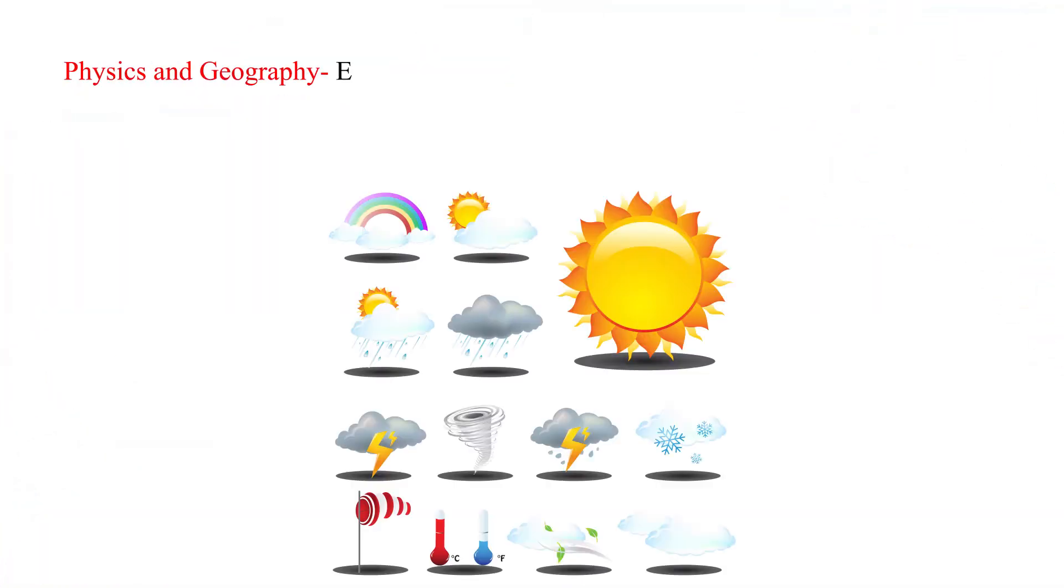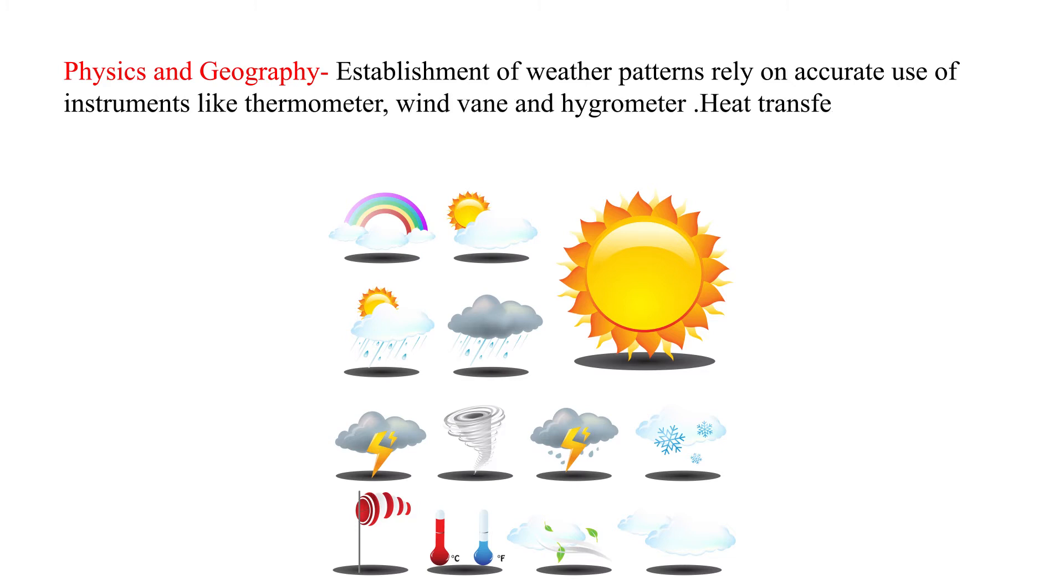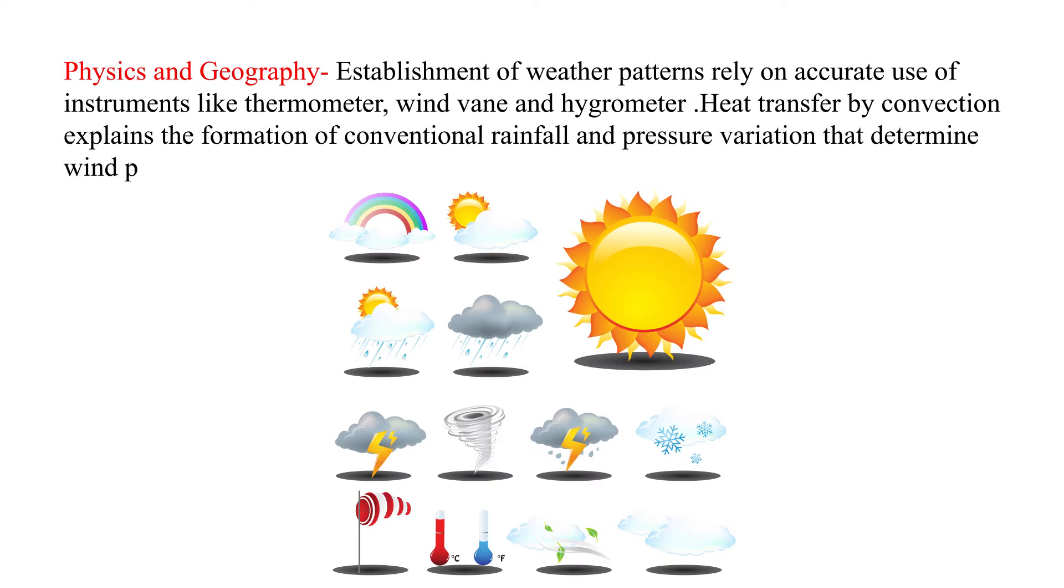Physics and geography. Establishment of weather patterns rely on accurate use of instruments like thermometer, wind vane, and hygrometer. Heat transfer by convection explains the formation of conventional rainfall and pressure variation that determine wind patterns. All these are physics concepts.